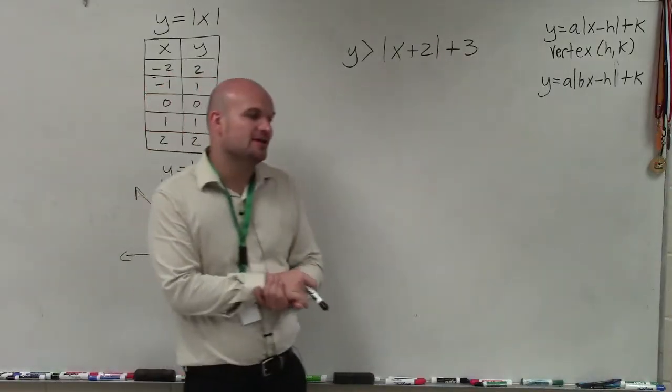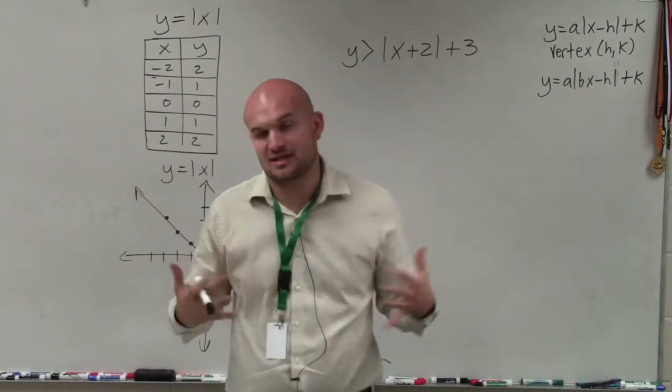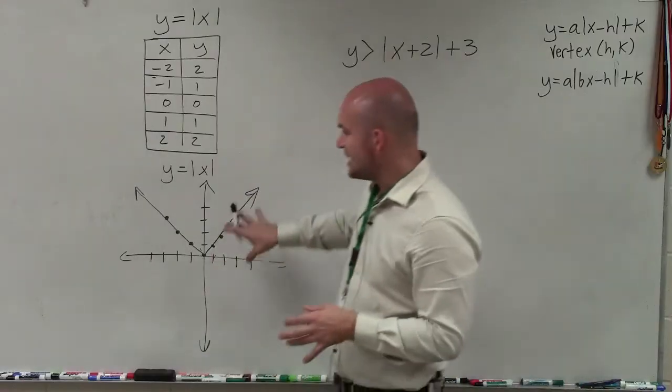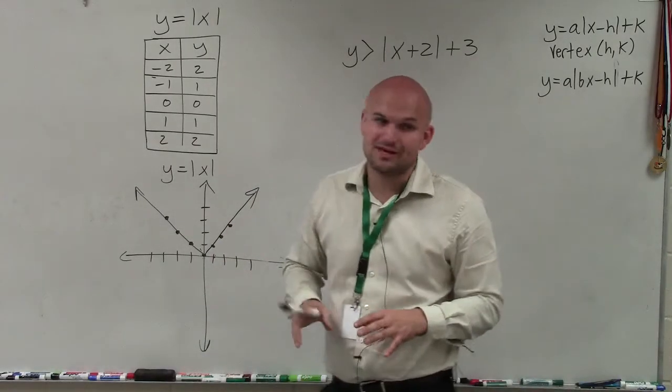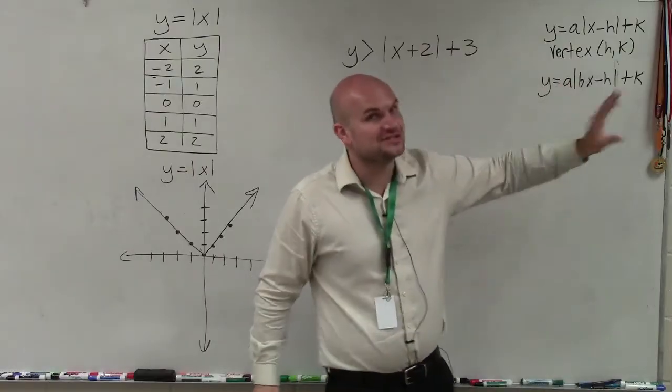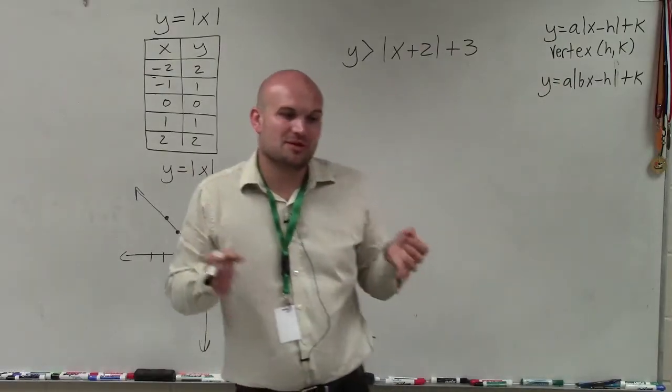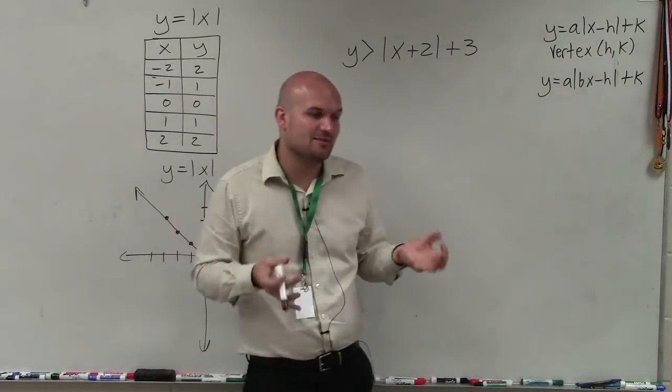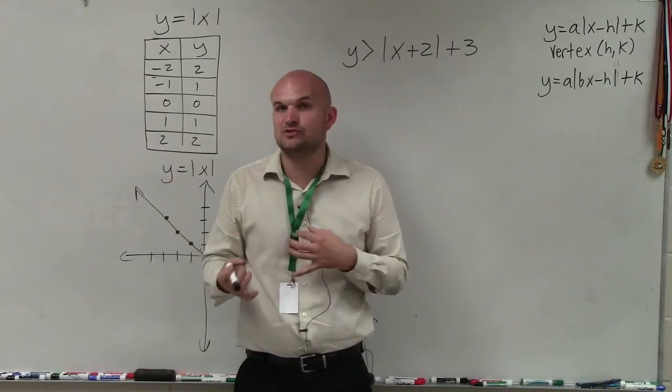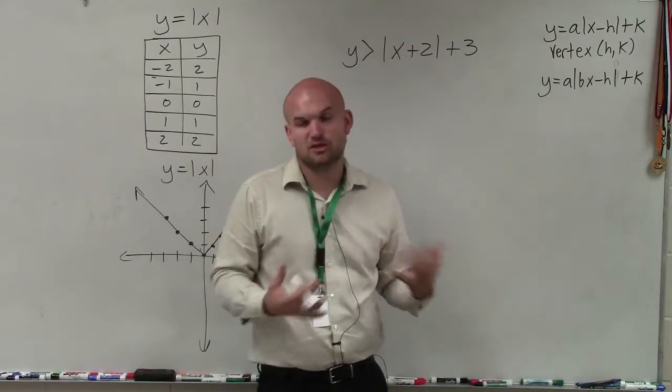To graph an absolute value inequality, we're going to graph it just like it's an absolute value equation. That's why I have the parent graph, the table, and the transformations for the absolute value equation. We're going to graph this just like an absolute value equation, but then use our shading or test points to determine the shading.